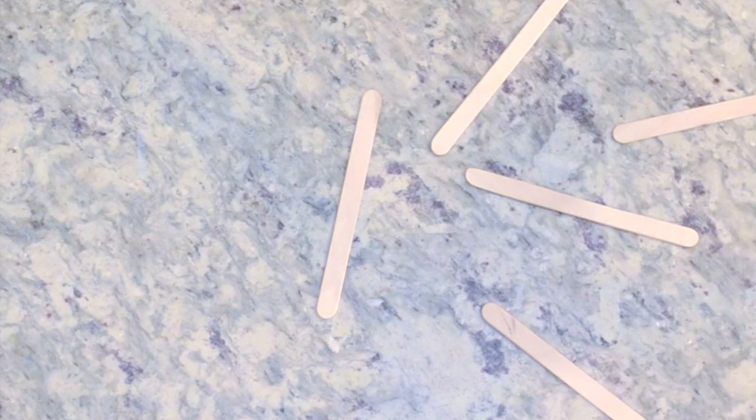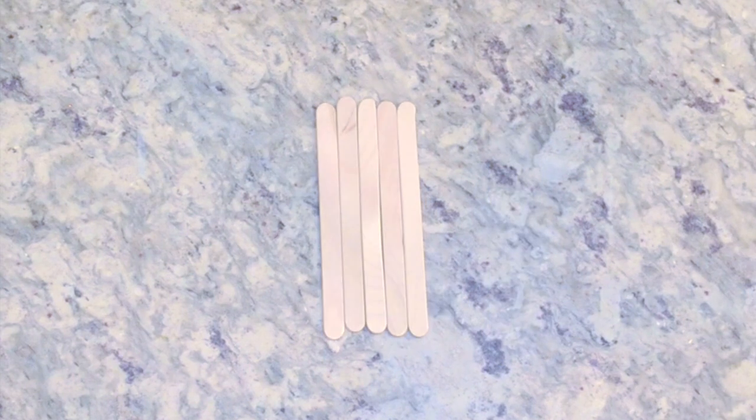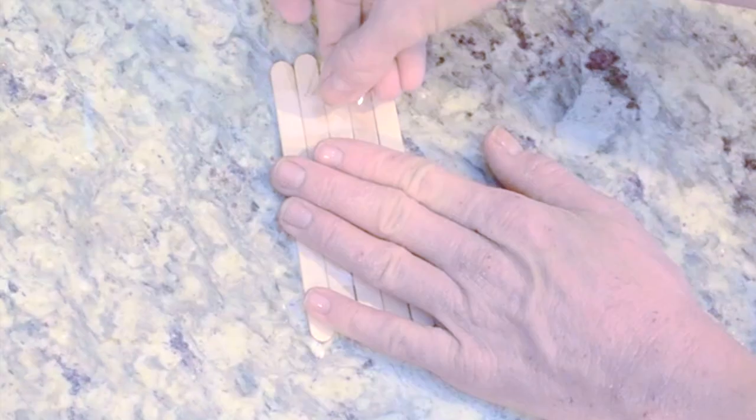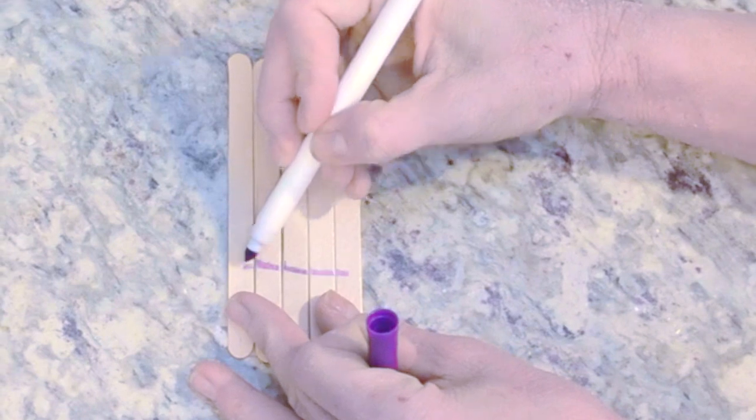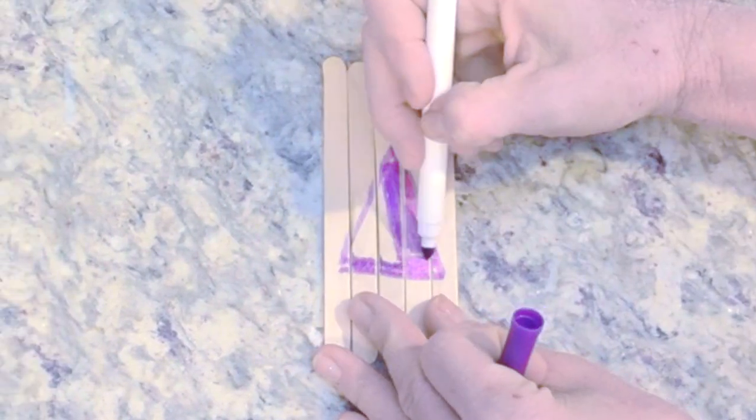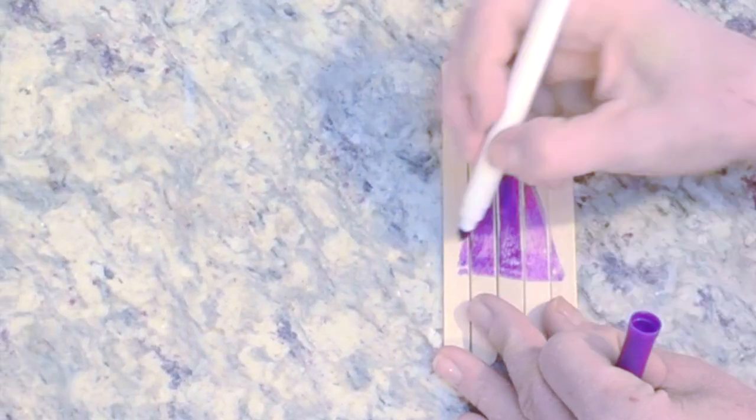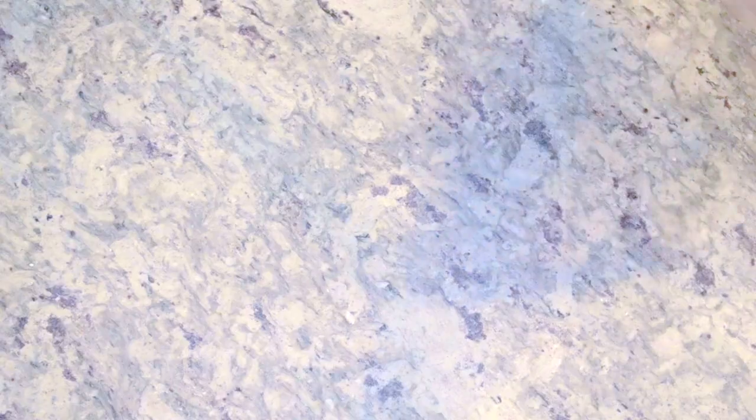And my next bag is going to be a popsicle stick puzzle. This is very simple. You just take popsicle sticks, tape the back of them, and then draw any kind of shape or animal that you want to on the front. I am not the best artist, so I'm just going for a triangle. And then I'll number the bottom of the popsicle sticks to make it easier for her.